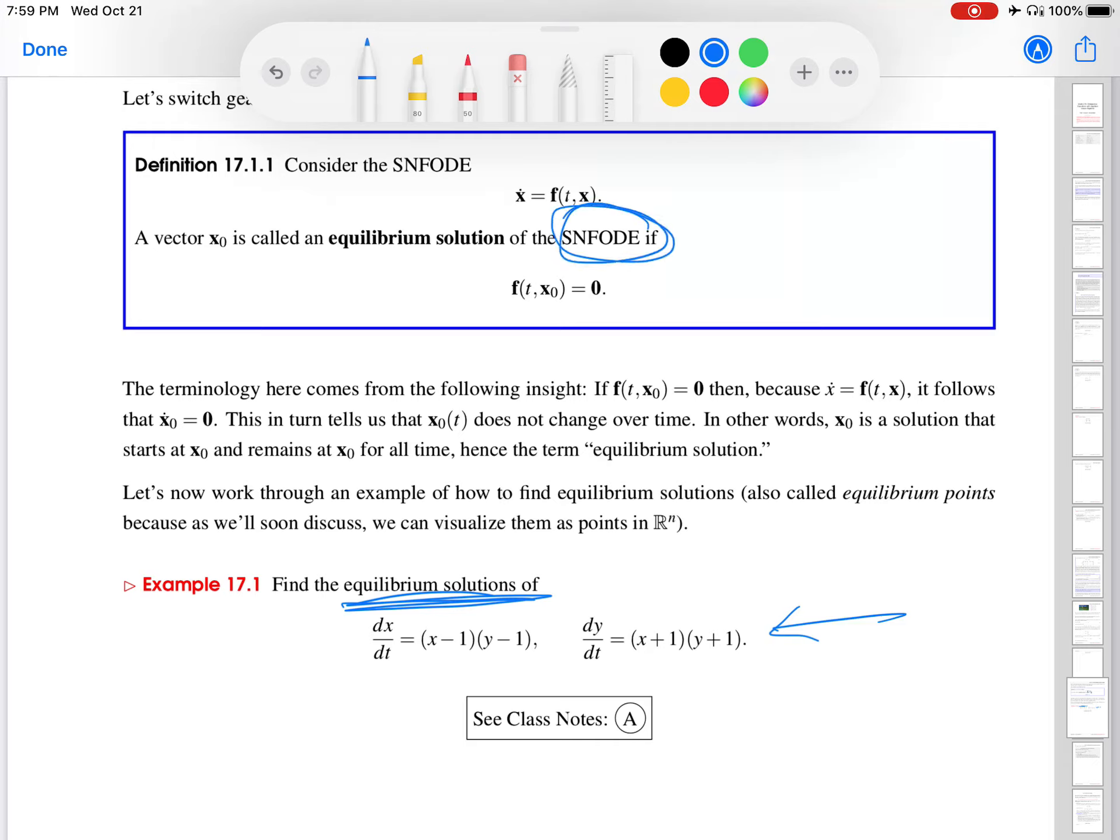Let's look at the definition up here. Consider this SNFODE. A vector x₀ is called an equilibrium solution if this condition holds. What this means is if I substitute this vector into the right-hand side of the system, I get the zero vector.